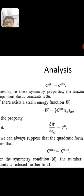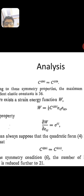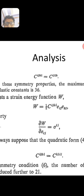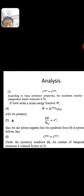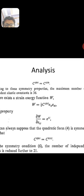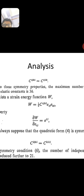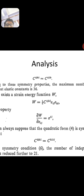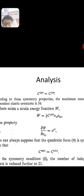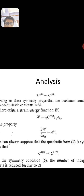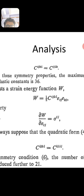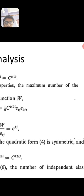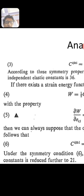If there exists a strain energy function W = (1/2) C_ijkl ε_ij ε_kl, with the property that ∂W/∂ε_ij = σ_ij, we can suppose that for symmetric C_ijkl = C_klij. Under this symmetry condition, the number of independent elastic constants is reduced further to 21.